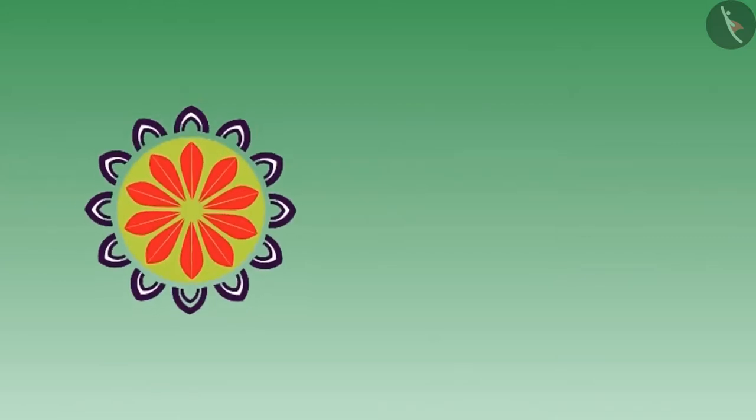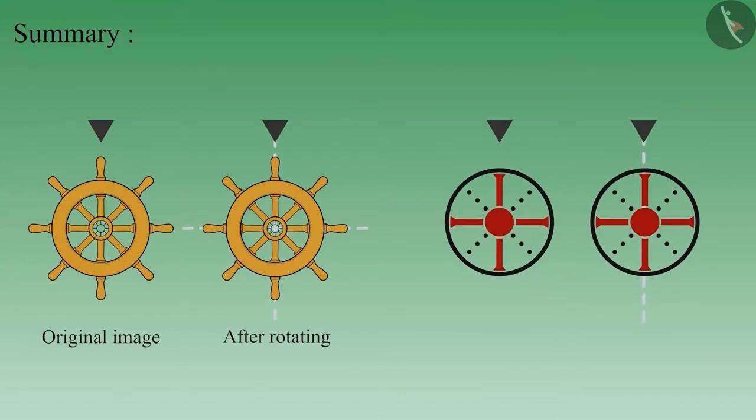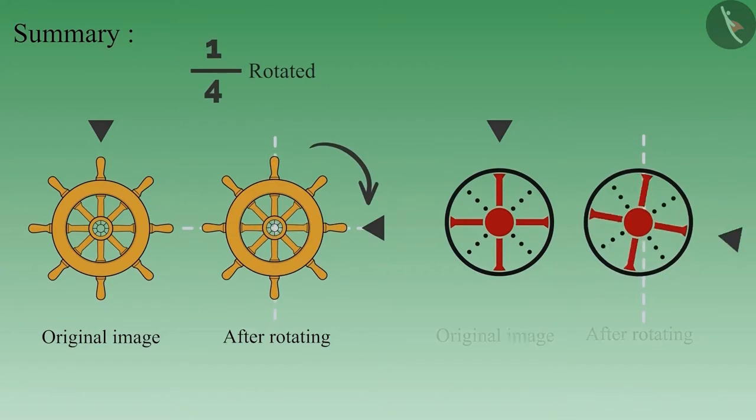After this, both of them get busy searching for another type of images. Why don't you also try to find similar images near you? In this video we saw that some objects and images do not change even after turning by one-fourth or half.